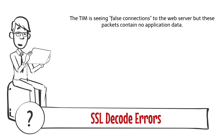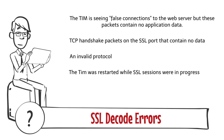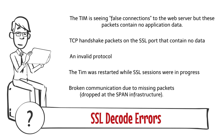These symptoms can be caused when the TIM is seeing false connections to the web server, but these packets contain no application data. This causes the TIM to generate a decode failure for each such connection. SSL Decode Failures can be due to TCP handshake packets on the SSL port that contain no data — an invalid protocol can be the cause of this. Other causes include the TIM being restarted while SSL sessions were in progress, or broken communication due to missing packets dropped at the span infrastructure.